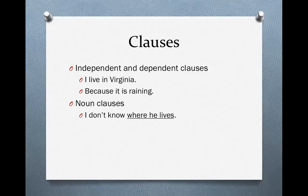Let's go over clauses briefly. There are two kinds of clauses: independent and dependent clauses. A clause is a group of words with a subject and a verb. Independent clauses, which we also sometimes call sentences, are clauses — groups of words with a subject and a verb — that can stand on their own.